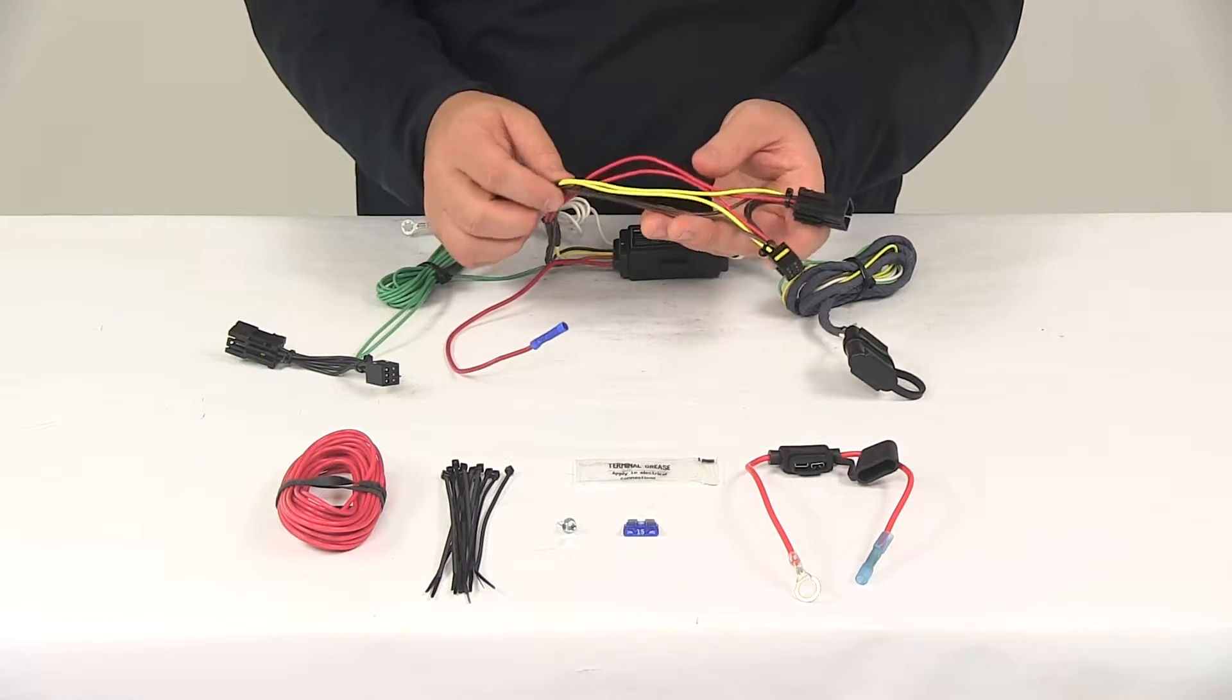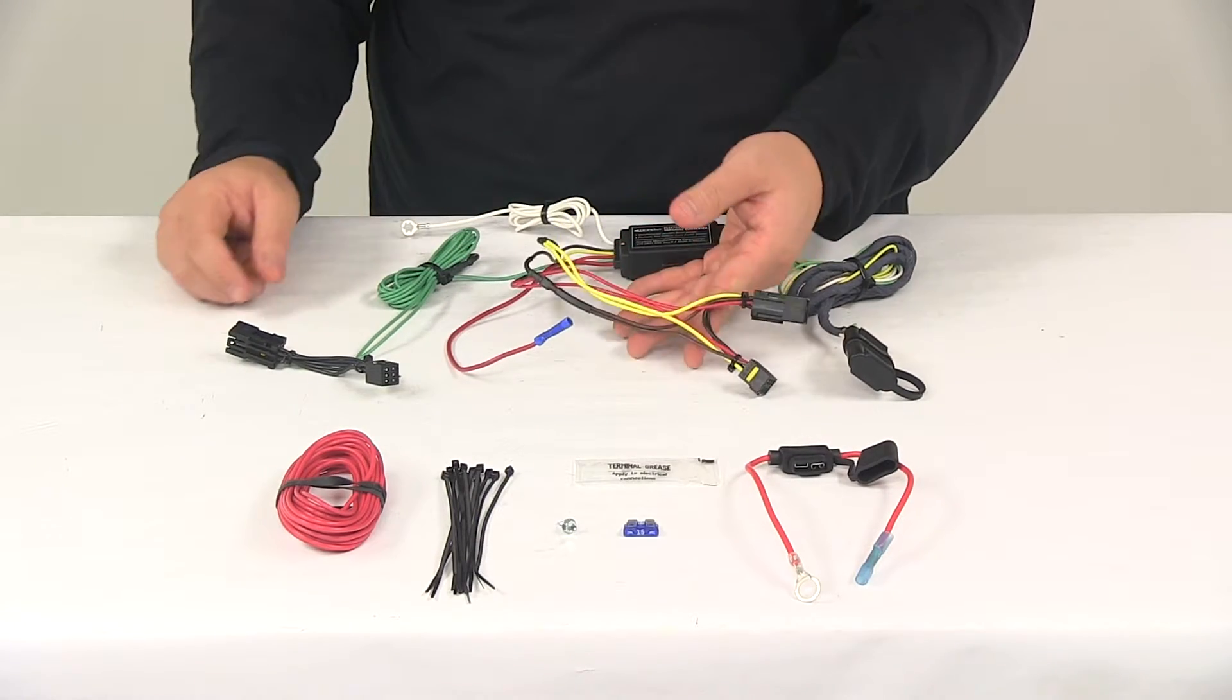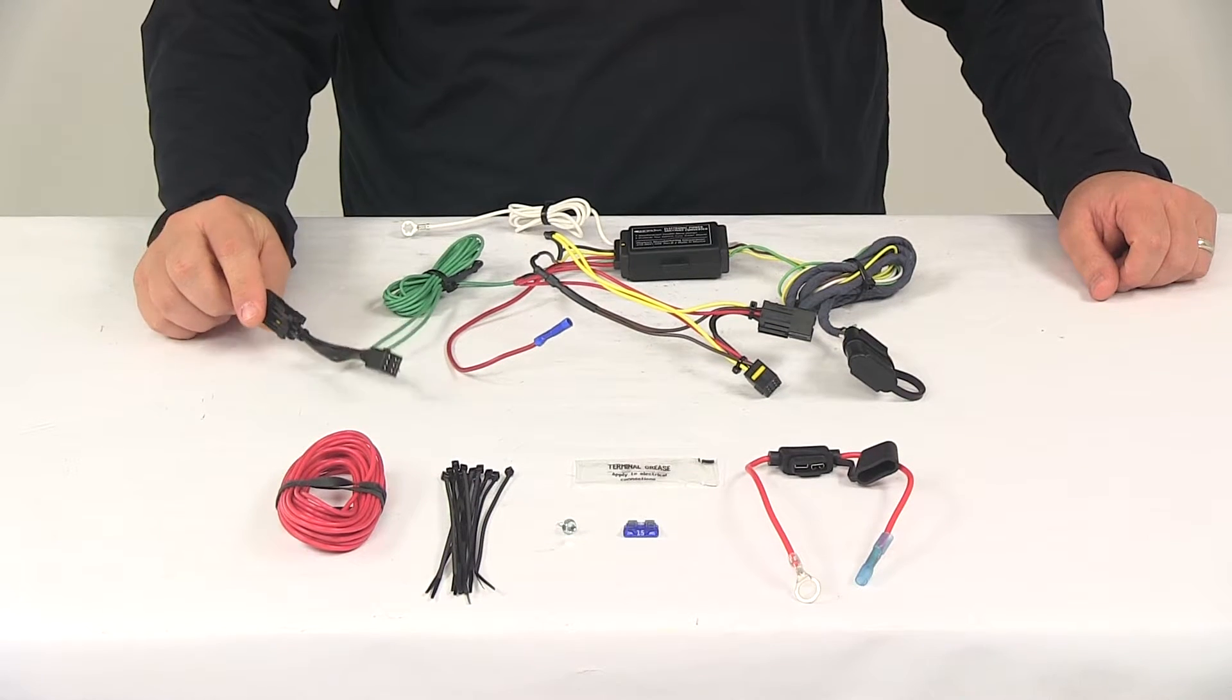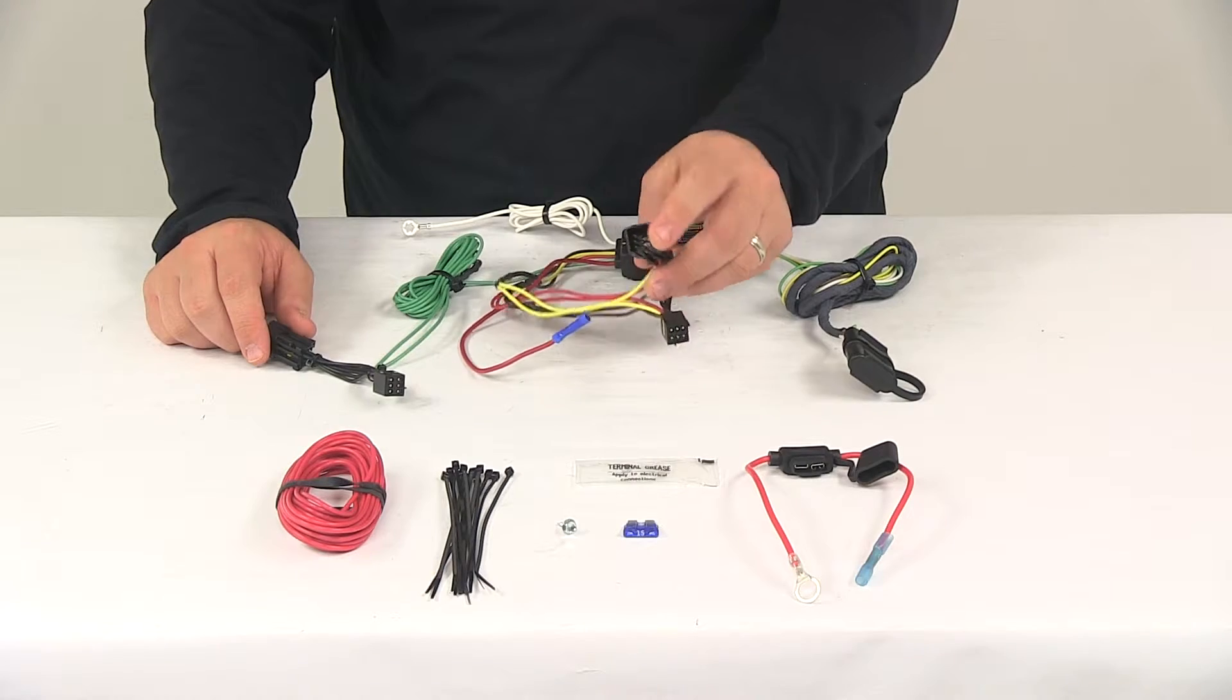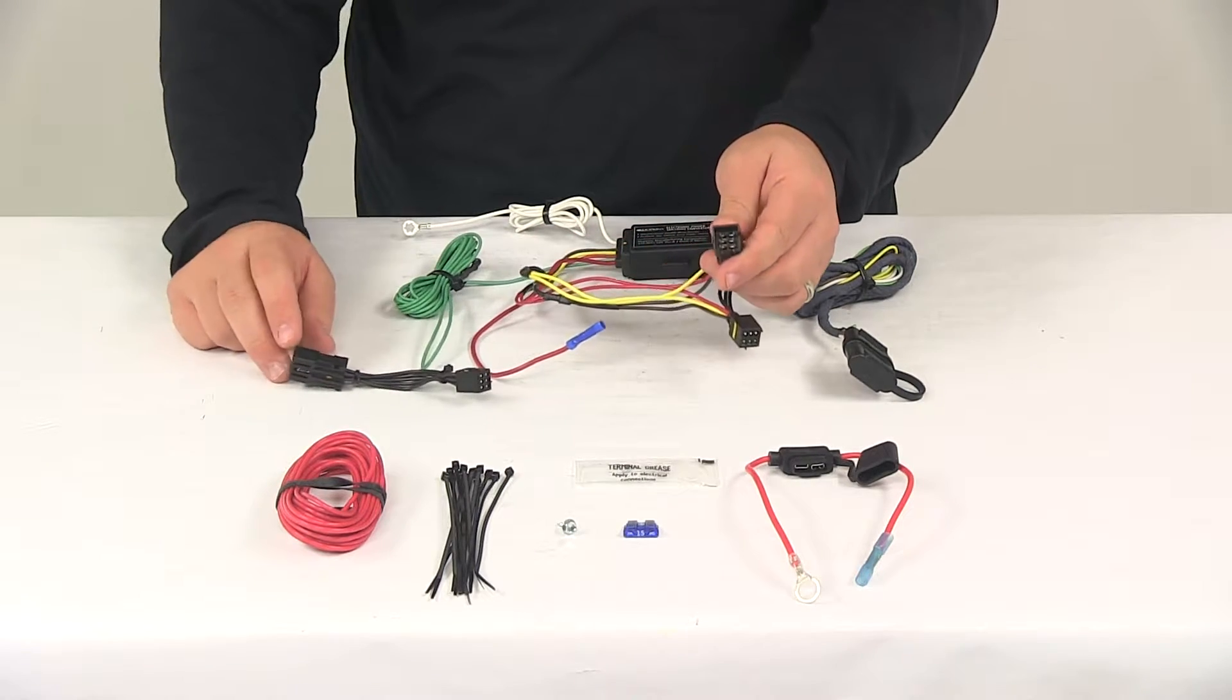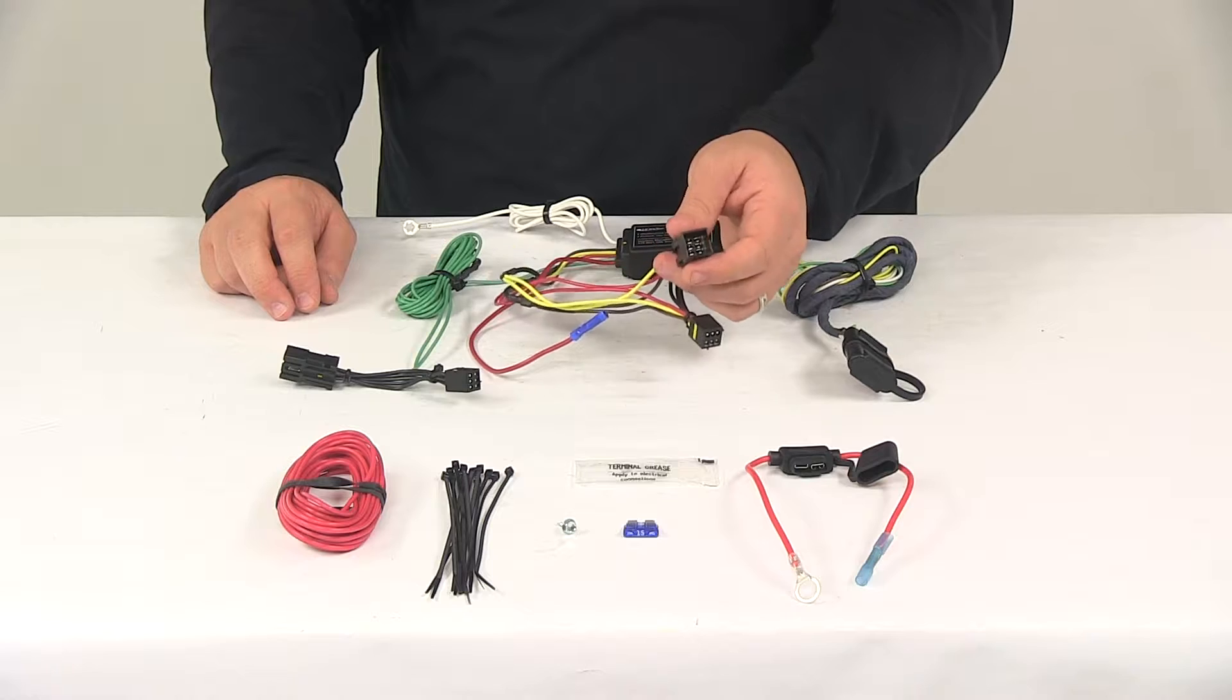The connectors with the yellow wiring go to the driver side. The connectors with the green wiring go to the passenger side of the vehicle. So locate your connection points, plug these in. These plugs are going to match up perfectly with the ports on the vehicle and they're going to snap lock together for a nice, tight, secure fit.